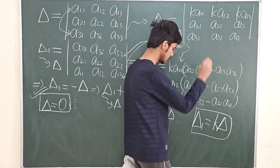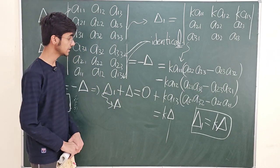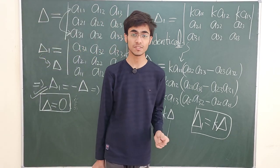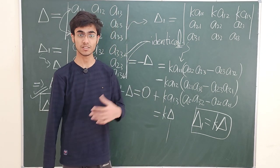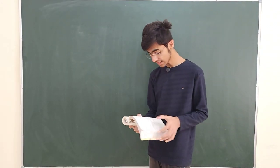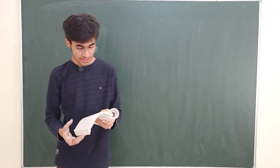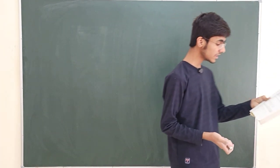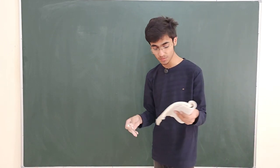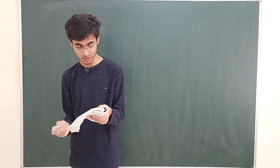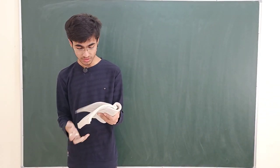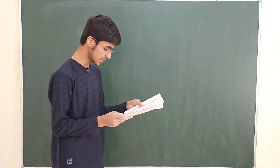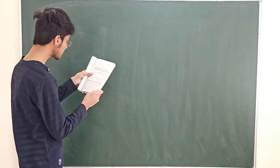That is the fourth property of determinants as given in CRT. Now Property 5: if some or all elements of a row or column of a determinant are expressed as a sum of two or more terms, then the determinant can be expressed as the sum of two or more determinants.